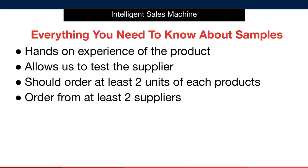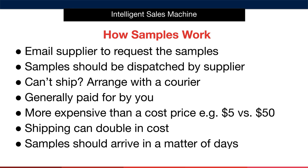Again, this is to test their product quality, their communication and their operating procedures. How do samples actually work? It's actually very simple. The first thing you're going to do after you've confirmed the economics behind the item is to email your supplier to request samples of the item or items that you're looking at. Samples will generally be dispatched by the supplier — usually they utilize their own FedEx or DHL courier account to ship the items to you. If a supplier doesn't have a courier account of their own, you would generally ship the item using your own courier by arranging for FedEx, DHL, or any courier company that ships from China to collect from your supplier and deliver to you.